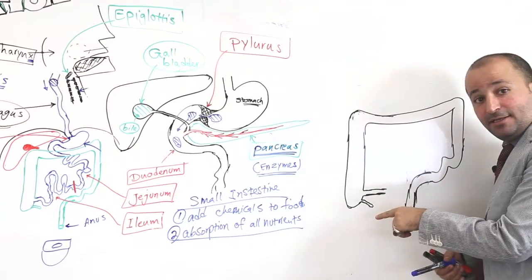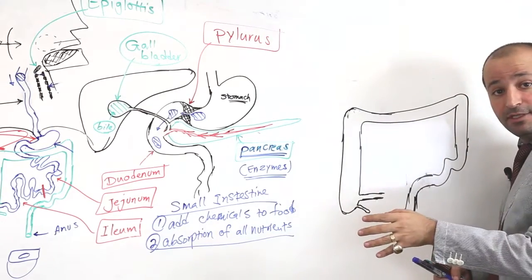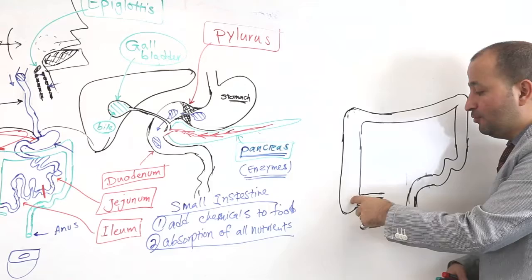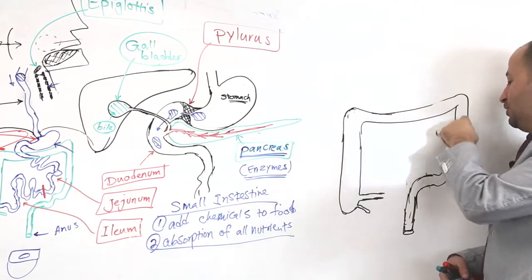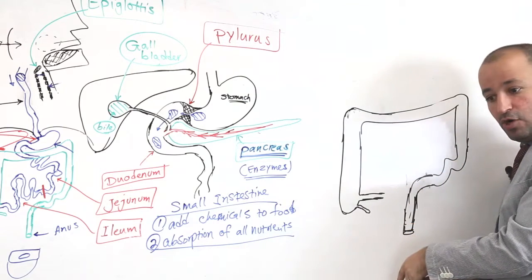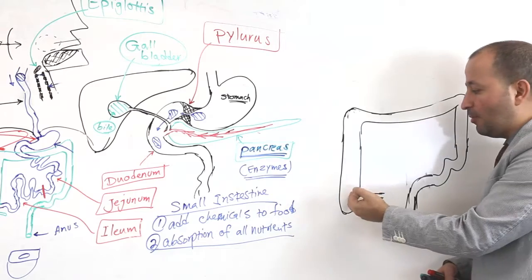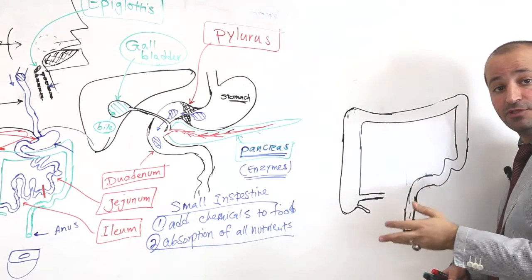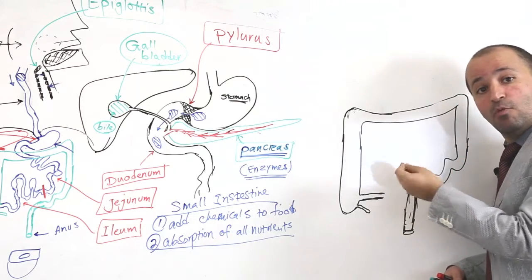So the large intestine is the part that the food, not food anymore, it's technically waste with water, is here, and then you need to, that needs to go through this tube before it leaves the body. So what you can guess the job of this tube is? Major, major, major job of this tube, large intestine is, you see me right? Is to absorb water.